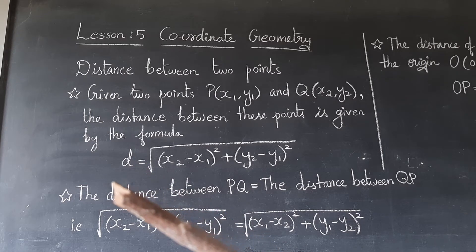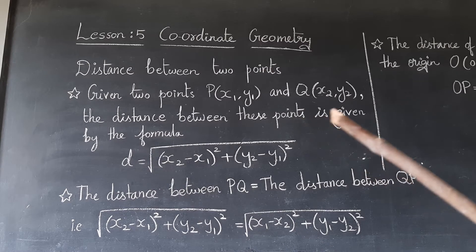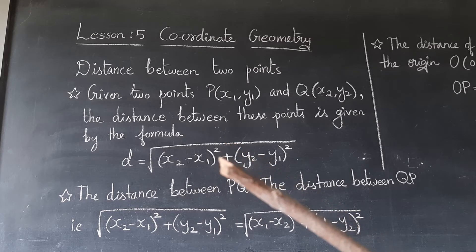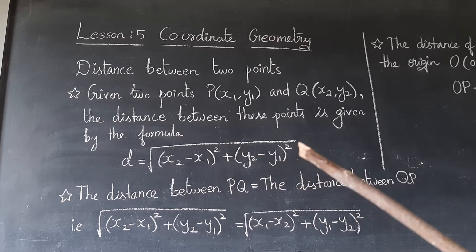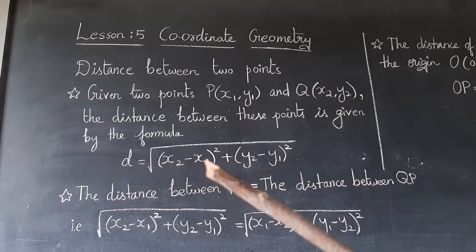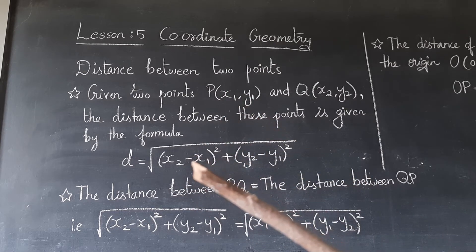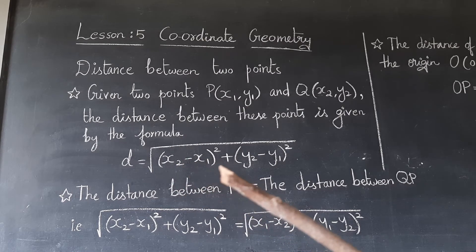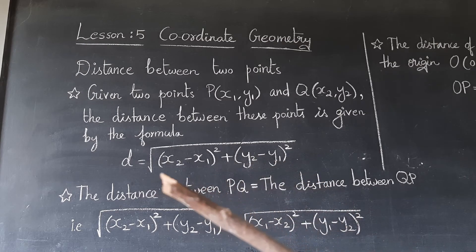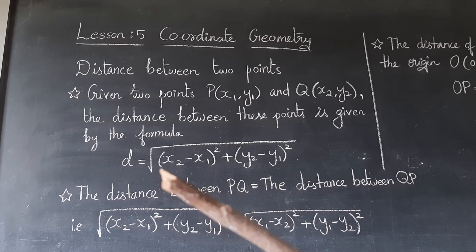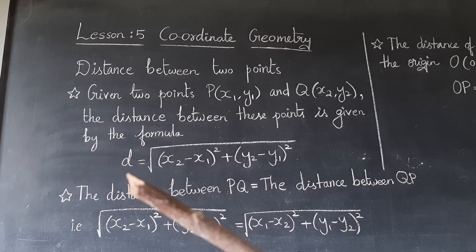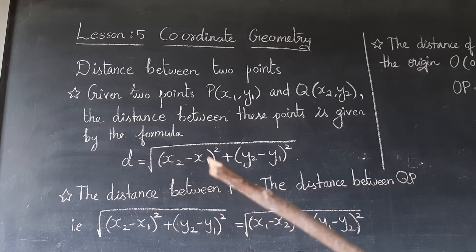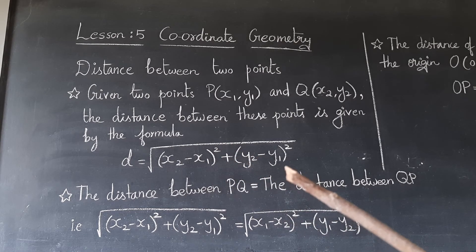The distance formula is: d = √[(x2 − x1)² + (y2 − y1)²]. Here, (x2 − x1) is the difference in x-coordinates and (y2 − y1) is the difference in y-coordinates. This distance formula is very, very important children — and it's also an easy formula.